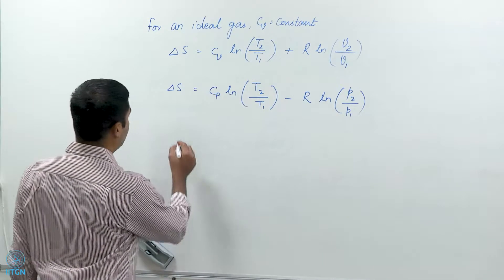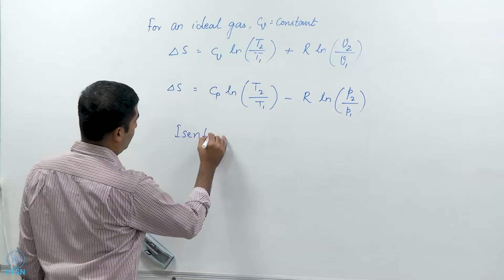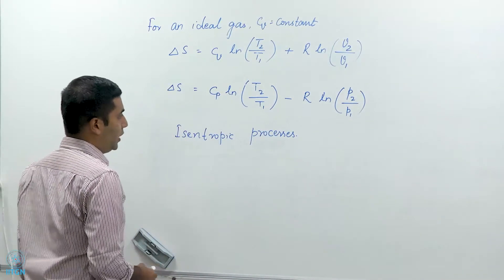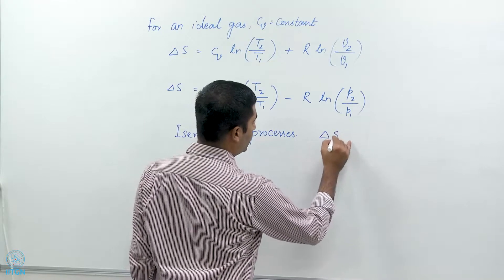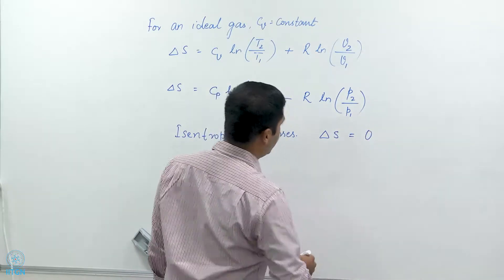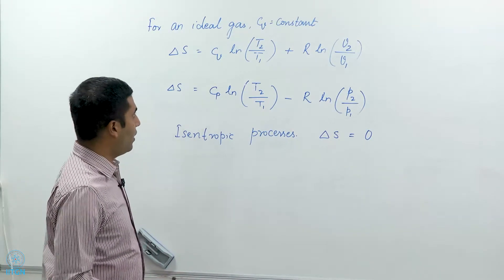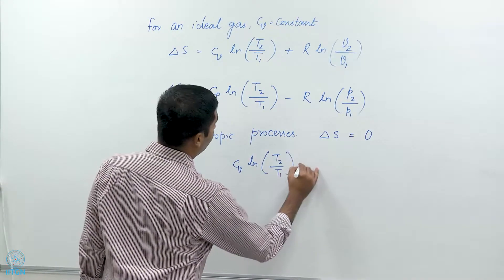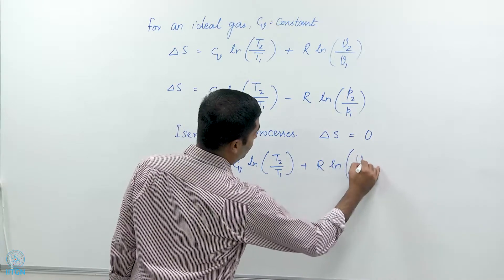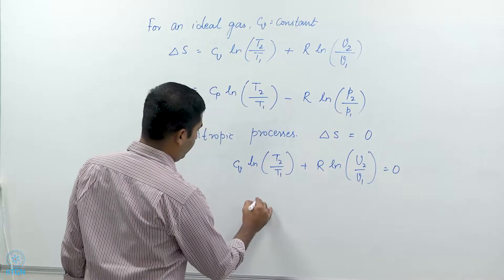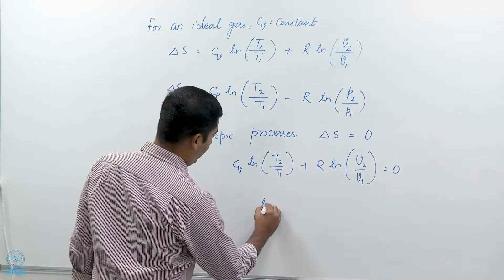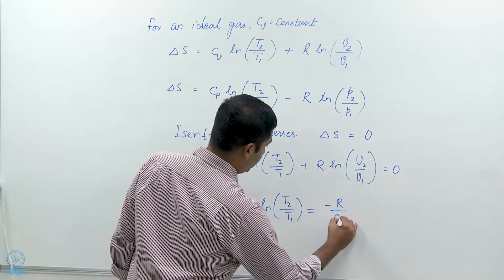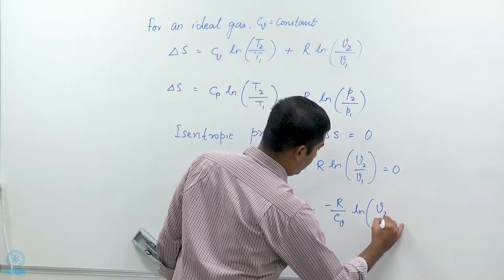Let us go one step further and ask: what happens in isentropic processes? As we recall, isentropic processes are those where entropy remains constant and delta S equals zero — these are essentially reversible adiabatic processes. So I can write C_V log(T2/T1) plus R log(V2/V1) equals zero, which means log(T2/T1) equals minus (R/C_V) times log(V2/V1).